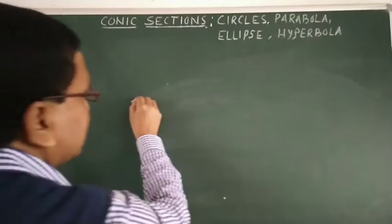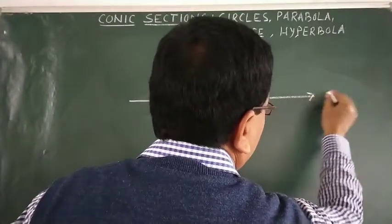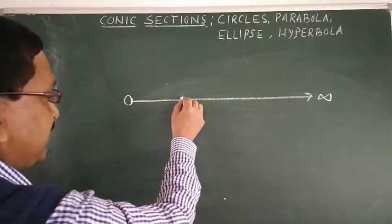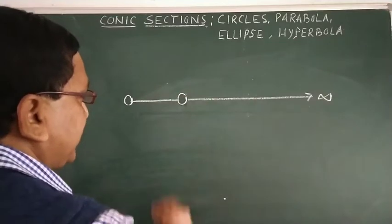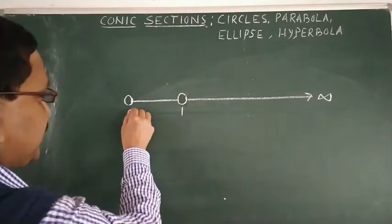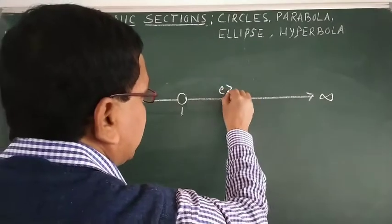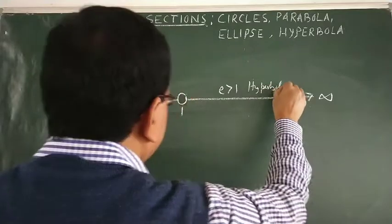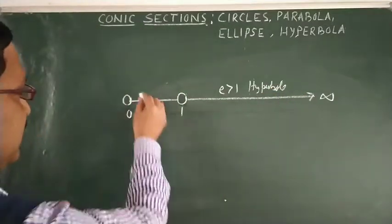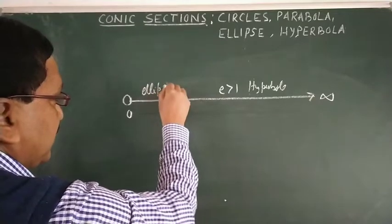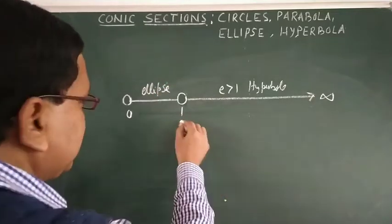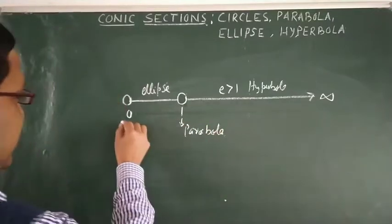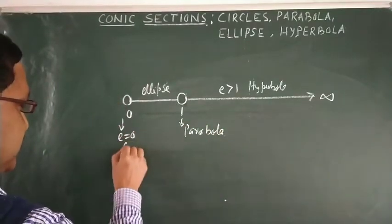Let us draw the number line of eccentricity from zero to infinity. Starting from zero to one — this is zero and this is one. For e more than one, we get hyperbola. If e is less than one, we get ellipse. If e is equal to one, we get parabola. And if e is equal to zero, we get a circle.